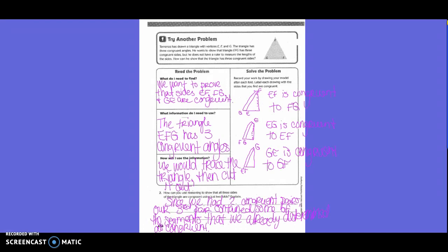Read the problem. What do I need to find? We want to prove that sides EF, FG, and GE are congruent. What information do I need to use? The triangle EFG has three congruent angles. How will I use the information? We would trace the triangle, then cut it out.